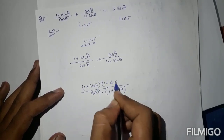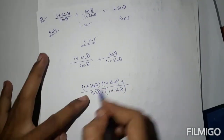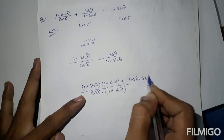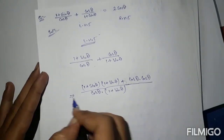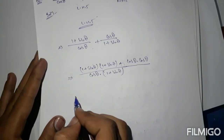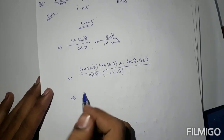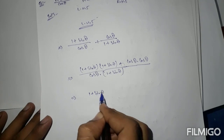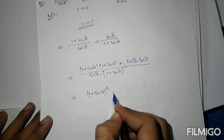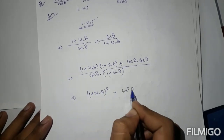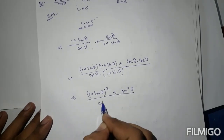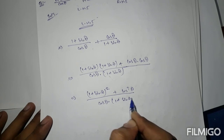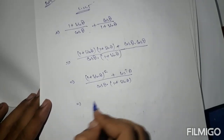In the next step we have (1 + sine theta)² plus cos²theta upon cos theta times (1 + sine theta). Expanding the numerator gives 1 + 2 sine theta + sin²theta + cos²theta.